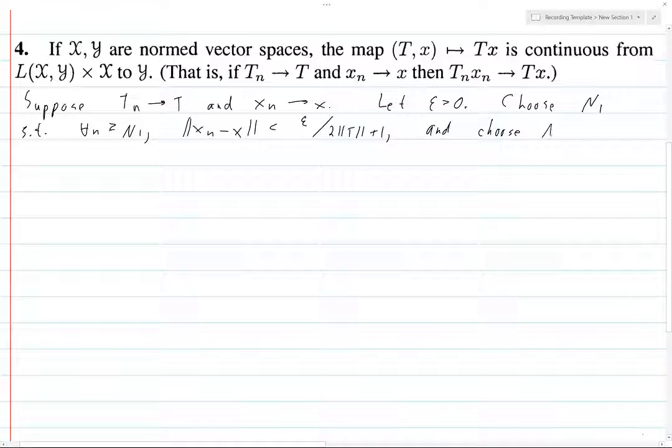And choose n2 such that for all n greater than or equal to n2, tn minus t is less than—we want epsilon over 2, and we're going to divide this whole thing by basically that thing we have over there. I'll put this in parentheses.